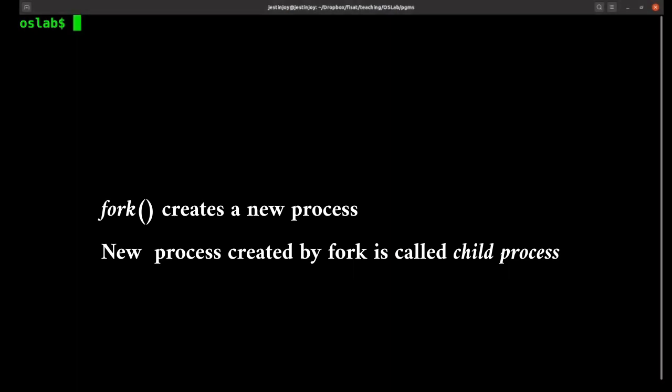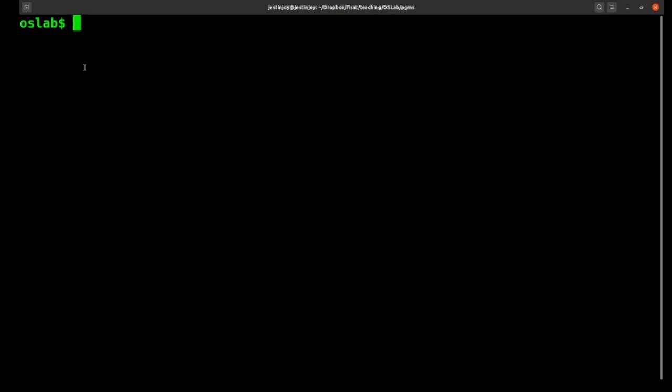Fork is a system call for creating a new process. The new process created is called the child process, and both the parent and the child process will be executing the lines after the fork system call. We will see this with the help of an example.